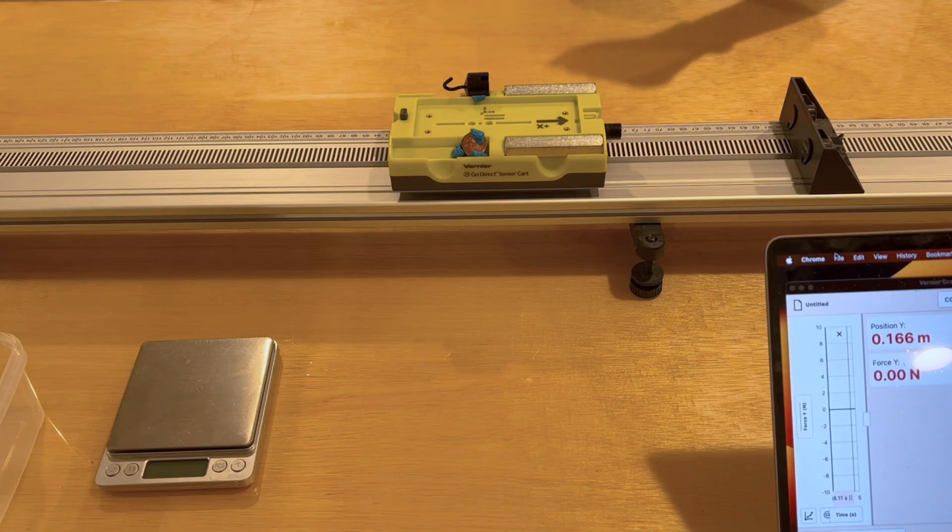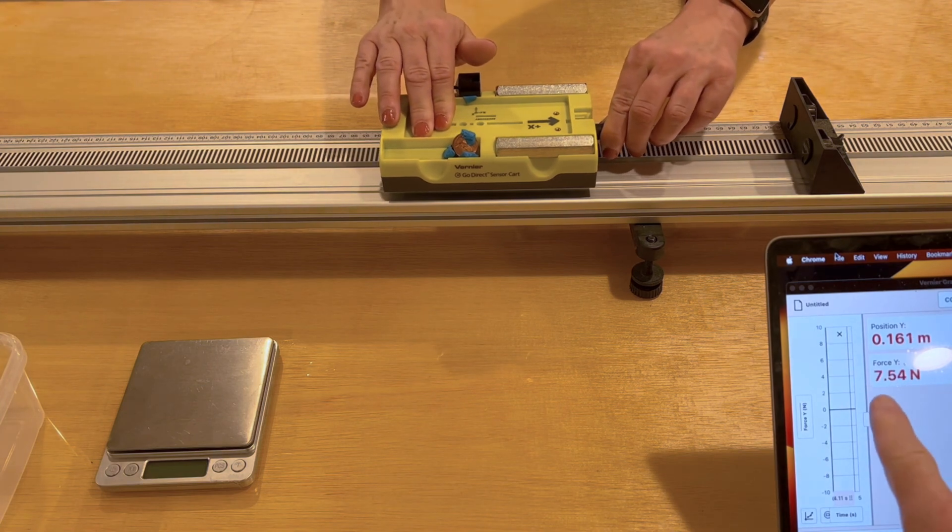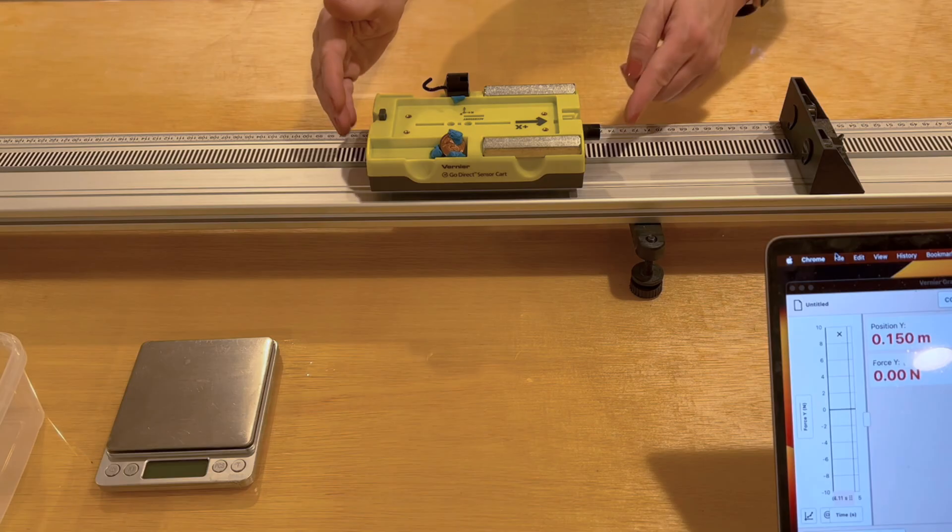The cart has a force sensor on this side of it. Notice that the force sensor reports positive values when you pull on it, and it reports negative values when you push on it.